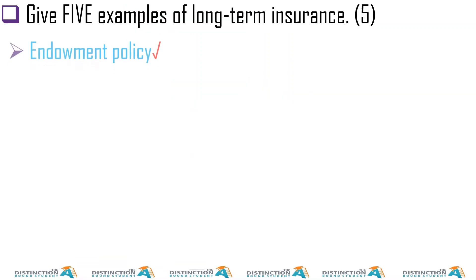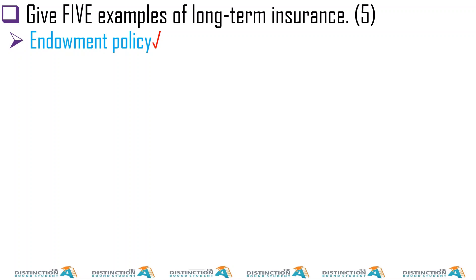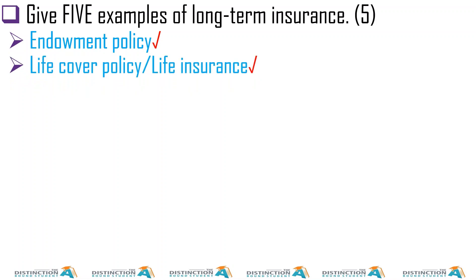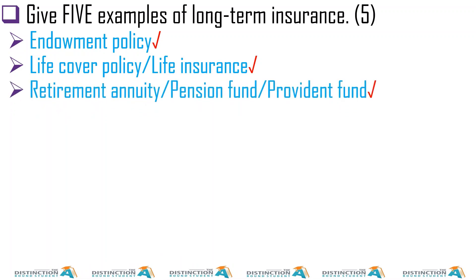Let's get started with the questions. The first question: give five examples of long-term insurance. You have endowment policy — I mentioned five years, ten years, fifteen years, or when you die. There's also life cover policy, or life assurance policy. And then retirement annuities. These three are assurance policies, but they are not the only examples of long-term insurance.